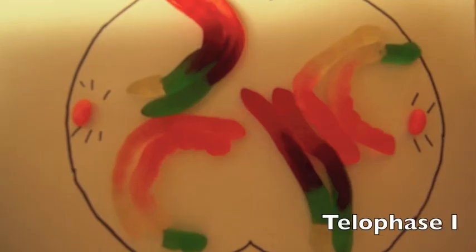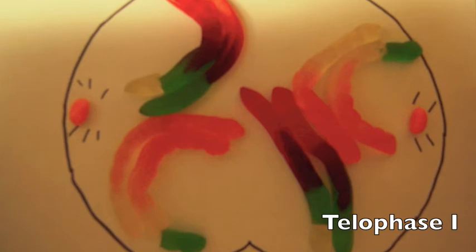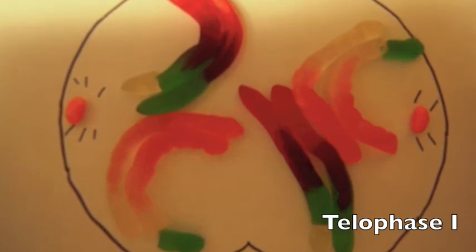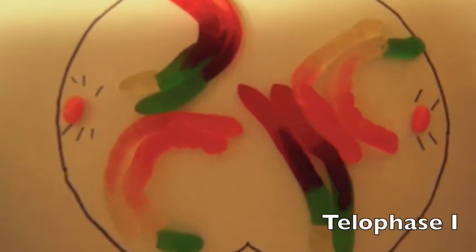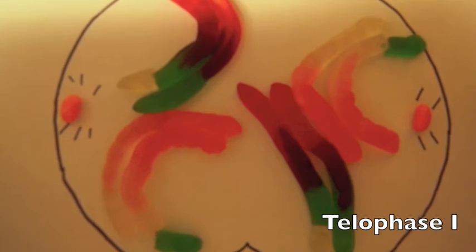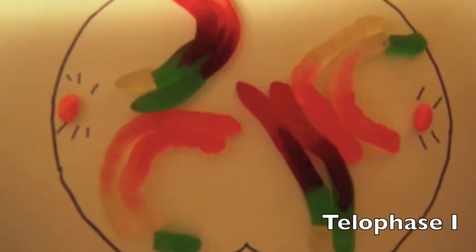Here, in telophase I, two nuclei are formed, each containing one half of the DNA from the original nucleus. These nuclei are different from each other and from the original nucleus. Each chromosome still consists of two sister chromatids.